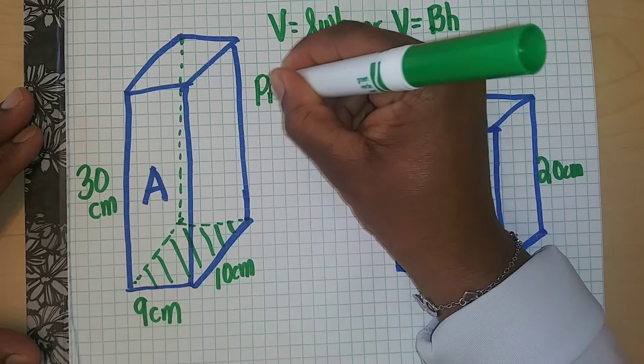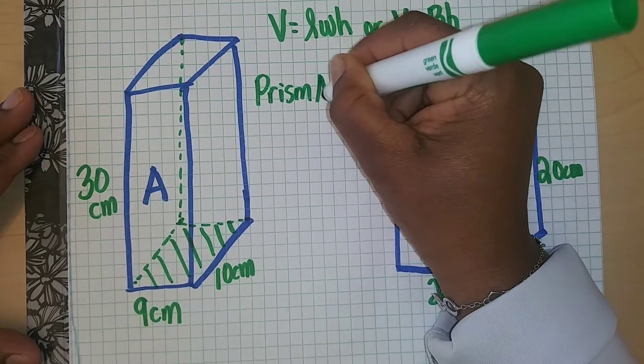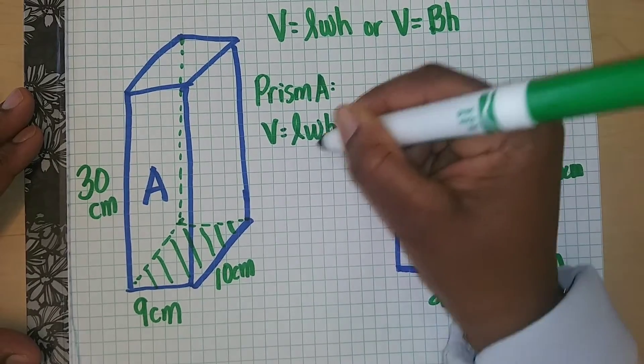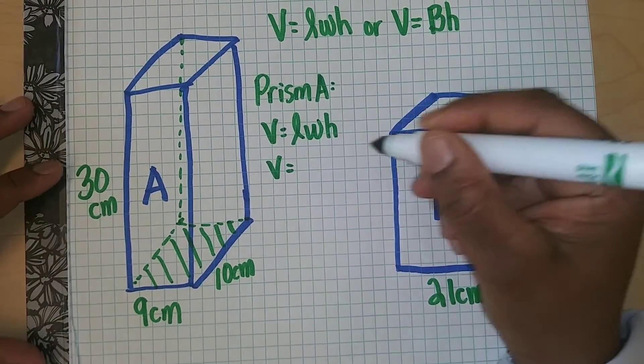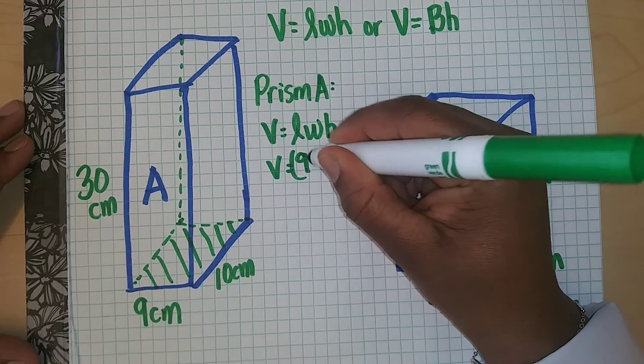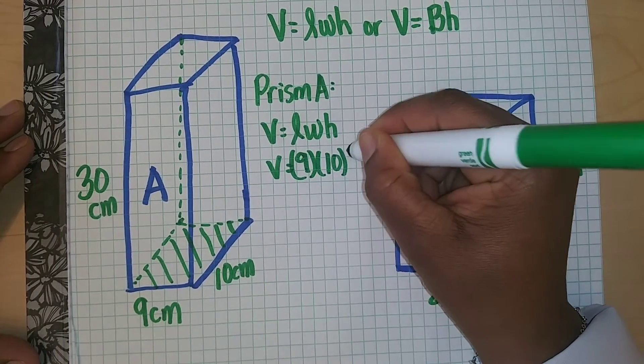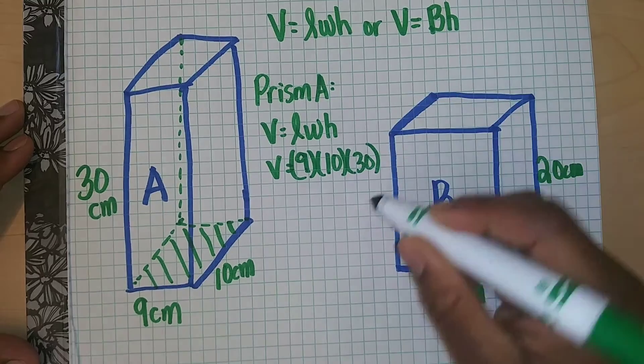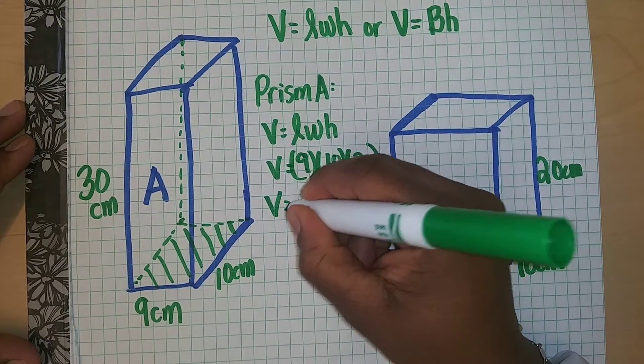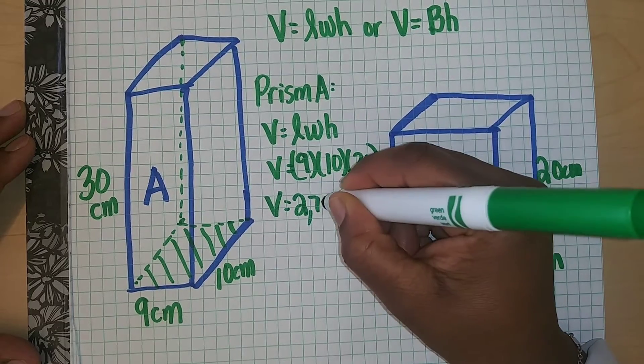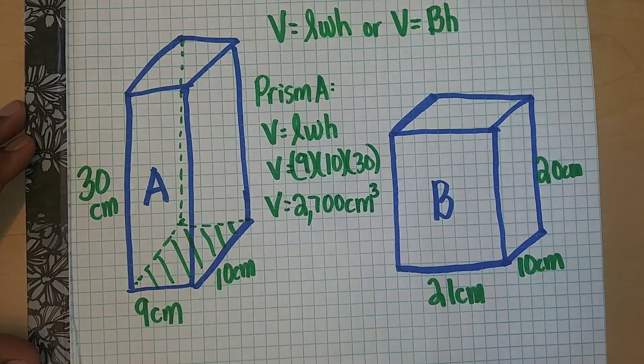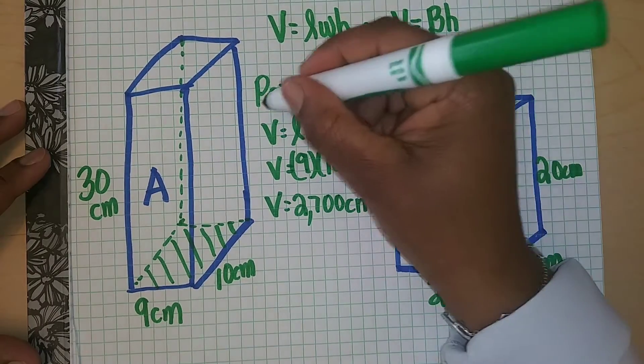Let's do prism A first. Volume is length times width times height. Volume is the same as in this case it'll be 9 times 10 times 30, and 9 times 10 is 90, and 90 times 30. The volume is 2700 cubic centimeters. That's for prism A.